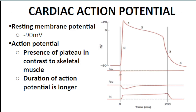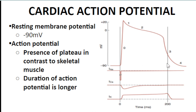The cardiac action potential has a resting membrane potential of negative 90 millivolts. Unlike skeletal muscle action potentials, the cardiac action potential has a plateau — a flat top — and its duration is much longer. This longer duration is necessary because the heart needs time to relax between contractions; otherwise, no blood would enter the heart and it would be an ineffective pump.